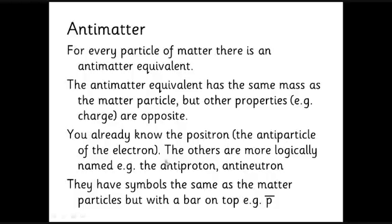For symbols, generally you put a bar on top — so a proton becomes an anti-proton with a bar over it. Again, the positron is awkward: people tend to write beta with a plus instead of minus, or e⁺. If you see e⁺ there's no bar, but remember that is an antiparticle.